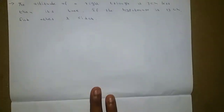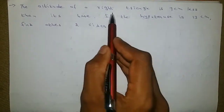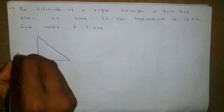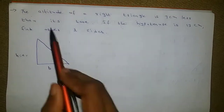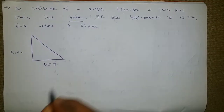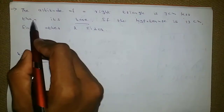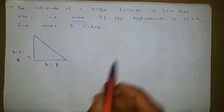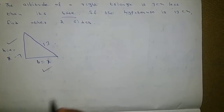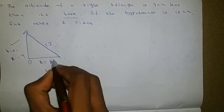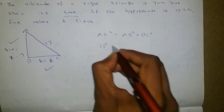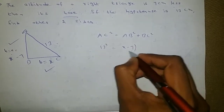Next question: the altitude of a right triangle is 7 cm less than the base. We have a right triangle with base x and altitude x minus 7. If the hypotenuse is 13 cm, find the base and height. Using the Pythagorean theorem with triangle ABC: AC squared equals AB squared plus BC squared, so 13 squared equals x minus 7 whole squared plus x squared.